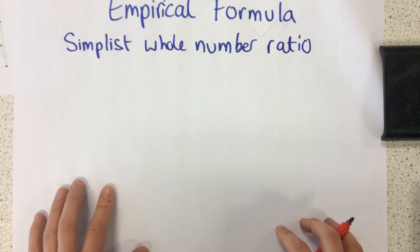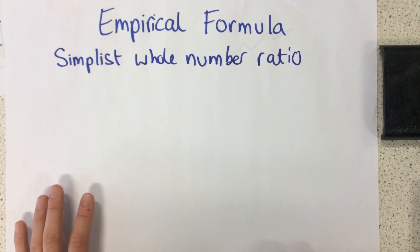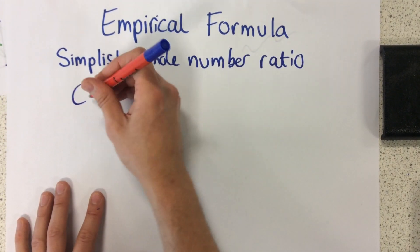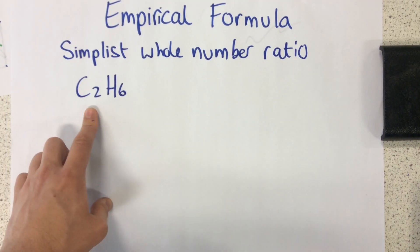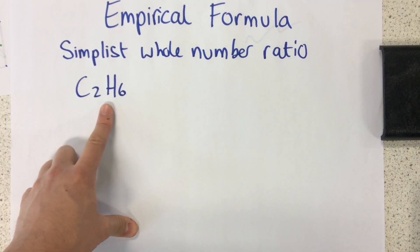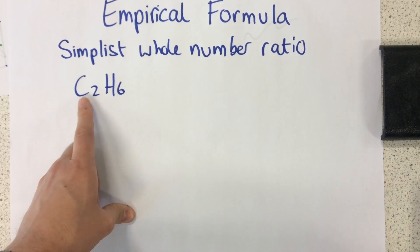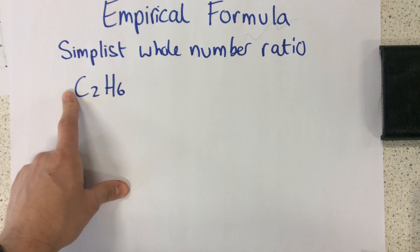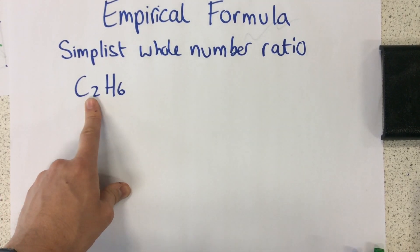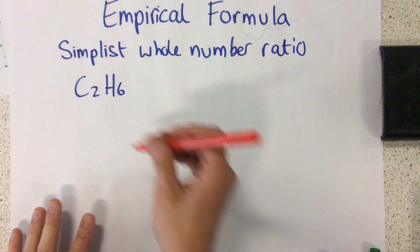Now this might seem a little bit confusing, so I'm just going to instantly show you an example because I think that helps to visualize it. So let's say if we had C2H6, I've been asked to find the empirical formula of this, the simplest ratio of carbon to hydrogen atoms. Now you might already be able to see it, but if you don't know how to do this, what you need to do is divide by the smaller number of the two.